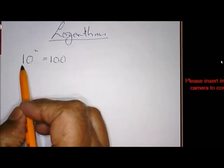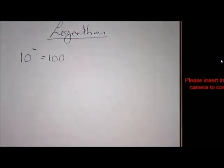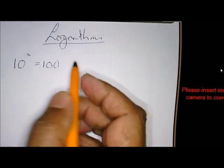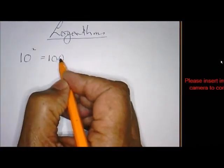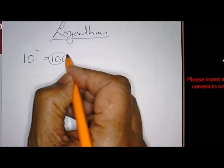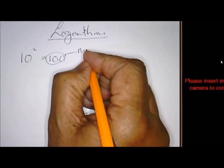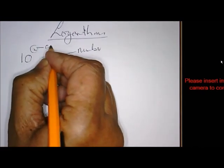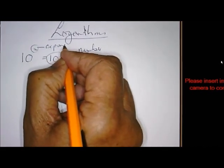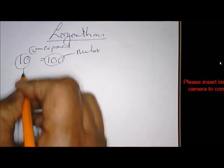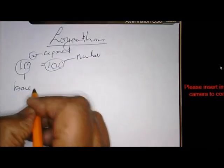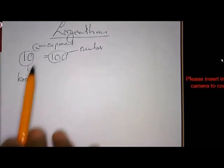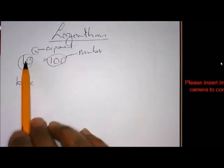For instance, 100 can be expressed as 10 squared. We all know that - in other words, the use of exponents. So this is important. 100 is the so-called number we're talking about, 2 is the exponent, and 10 is the base.